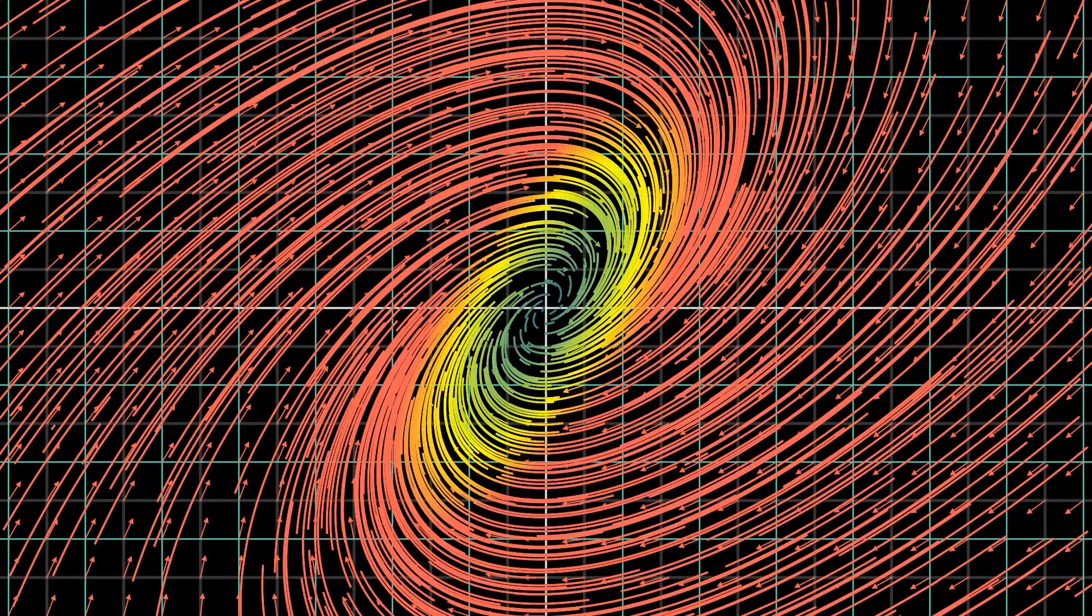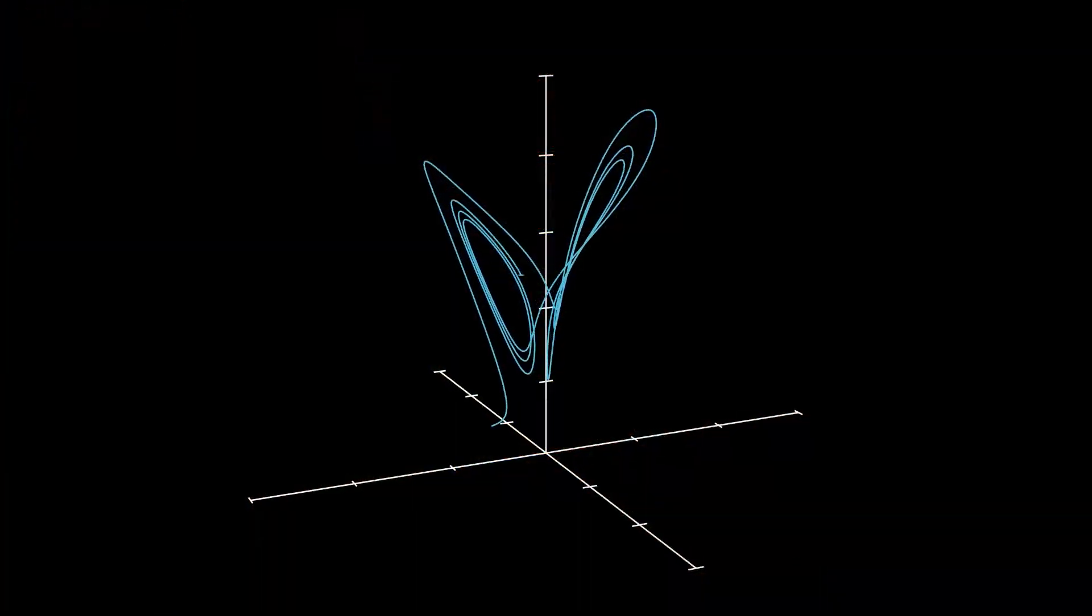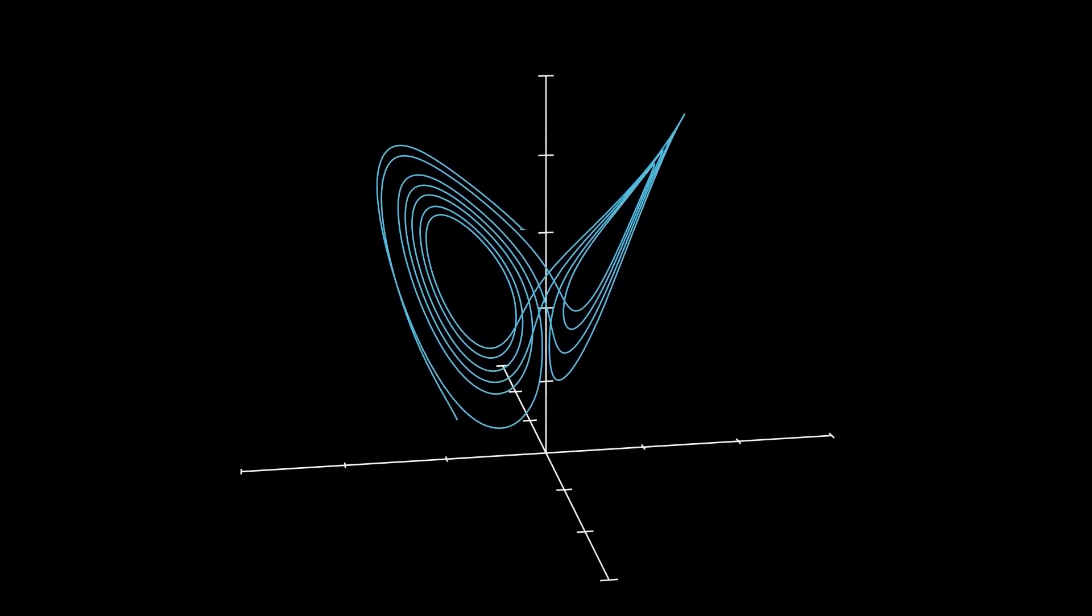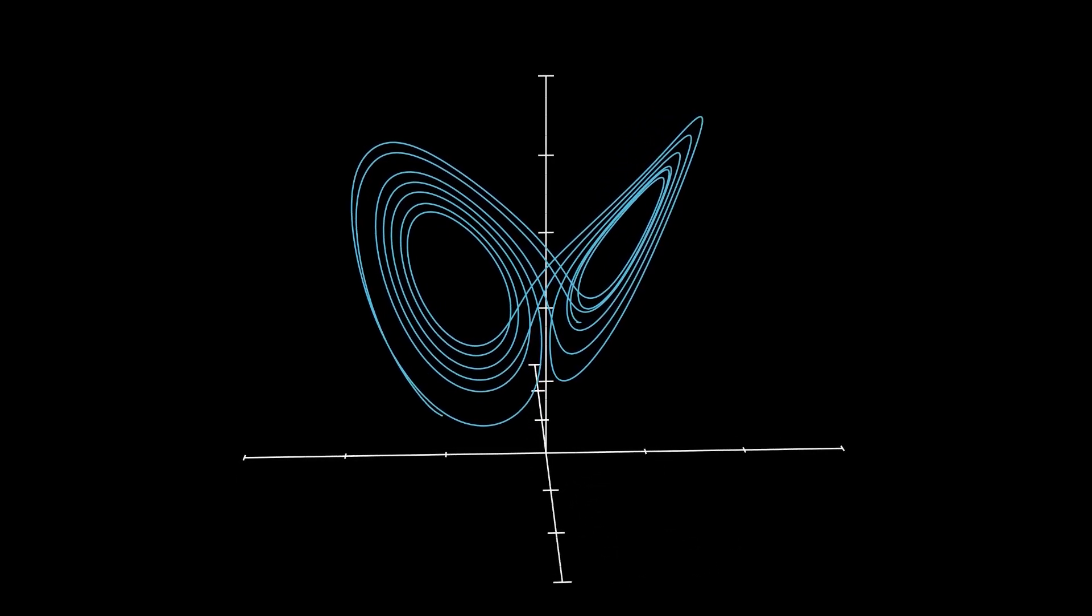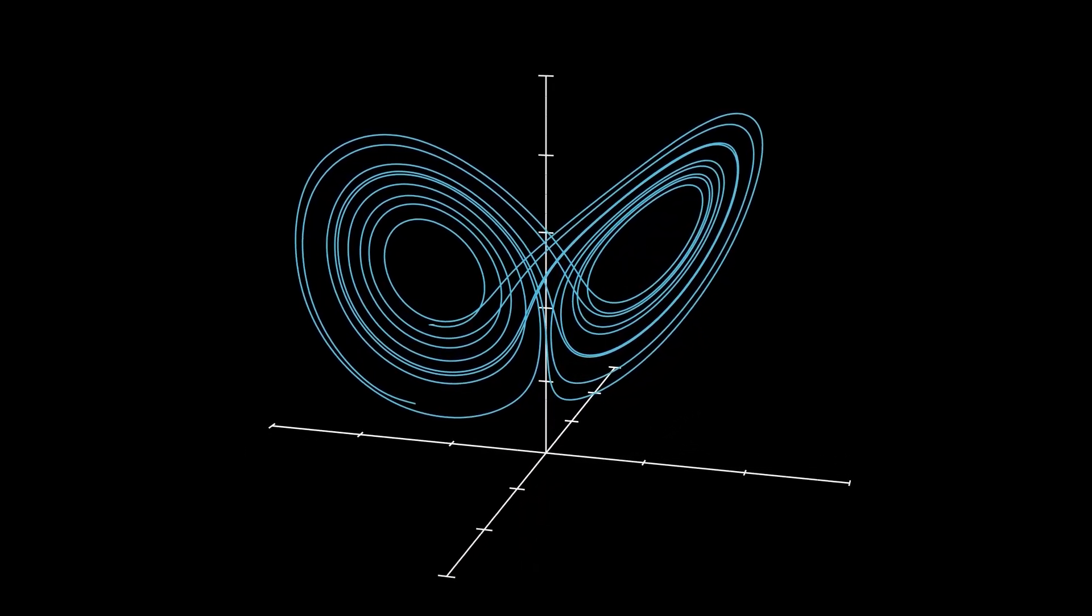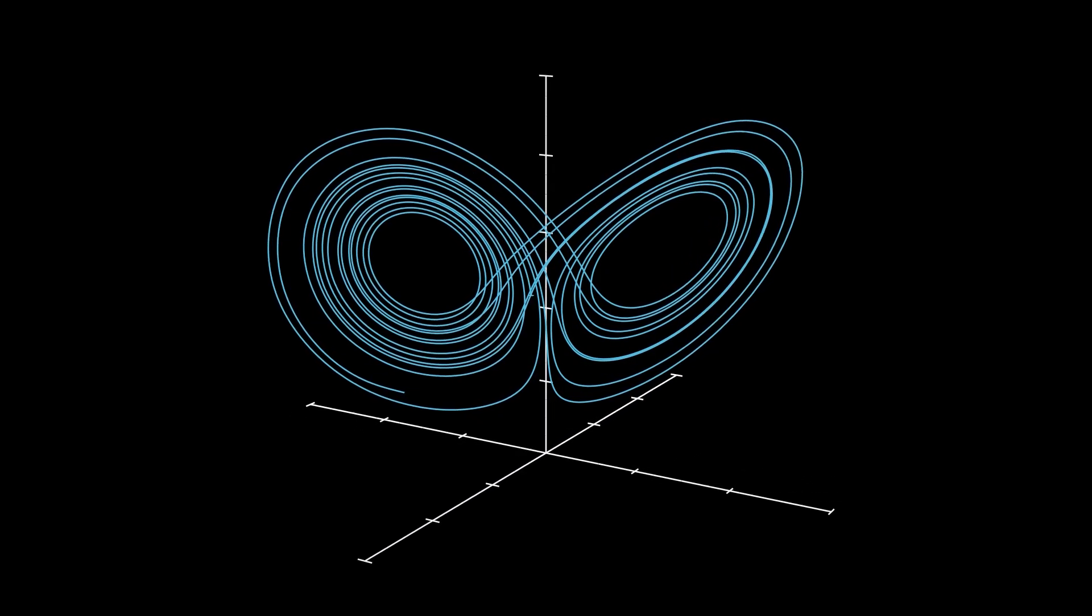However, the Lorentz attractor is different, seemingly continuing to grow indefinitely, bound by this unusual butterfly-like structure. And this turns out to be exactly the case. The Lorentz system, despite being bounded by this finite structure, will never pass through the same point twice, no matter how long you leave it running.